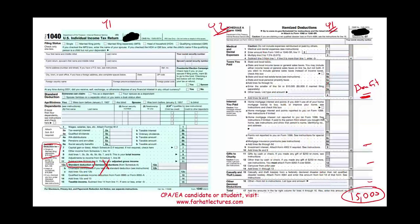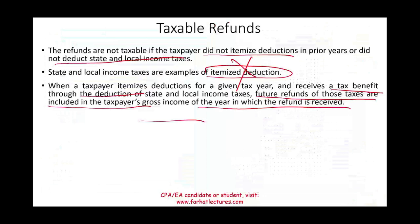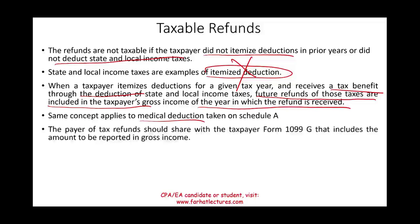If you itemized and took a medical deduction, and then the insurance company refunded you that money, you have to include it as income because you took advantage of the itemized deduction — same exact concept. The payer of the tax refund should share Form 1099-G with the taxpayer. When you receive a refund, whether from a state or local government, they will send you a 1099-G telling you the amount of the refund. However, it does not have to be included in income unless you itemized and benefited from that itemization.